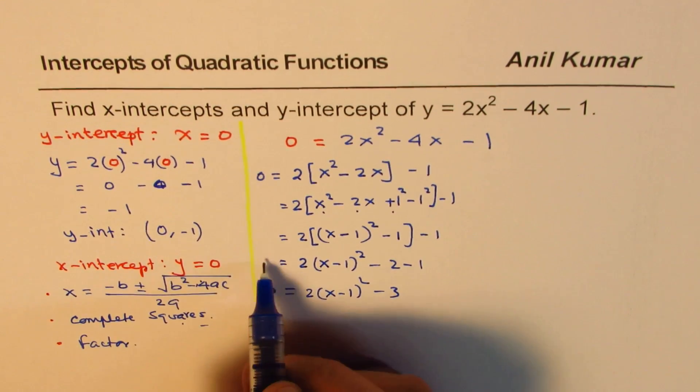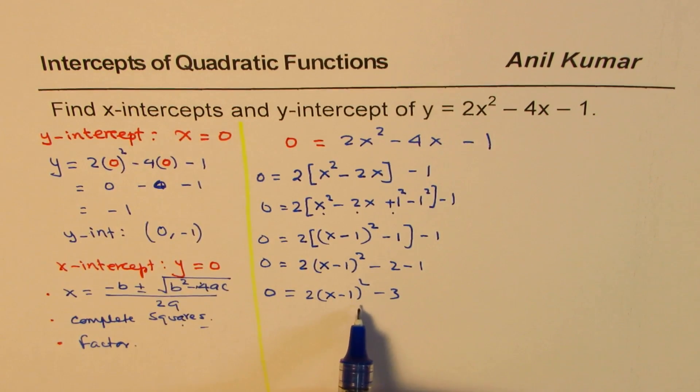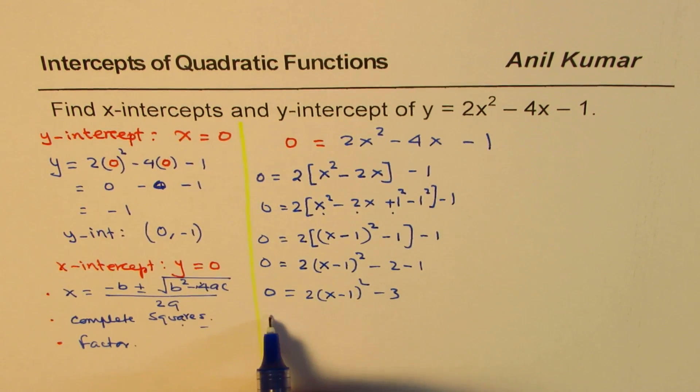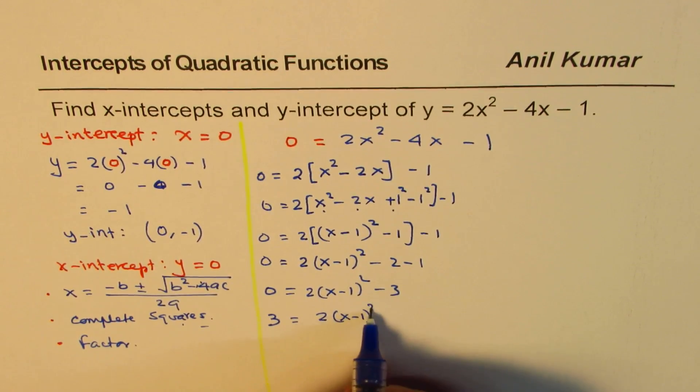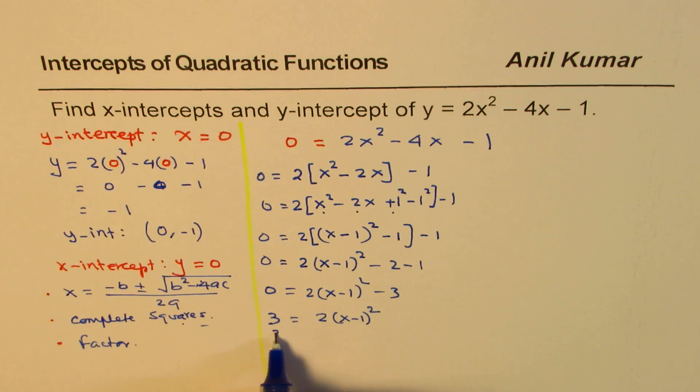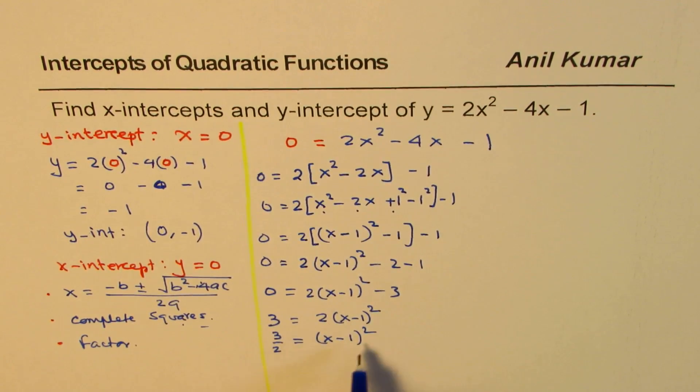Remember, all this is equal to 0. Now we have a quadratic equation in vertex form. Can you solve it? Take 3 to this side. So we get 3 equals 2 times x minus 1 whole square. So divide by 2. So we get 3 over 2 equals x minus 1 whole square.